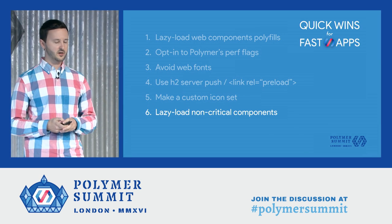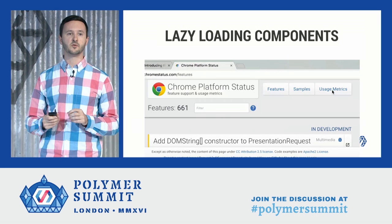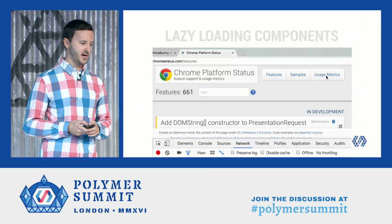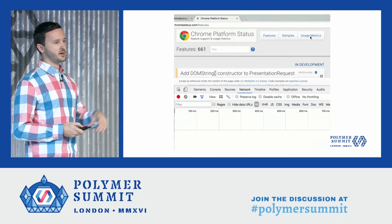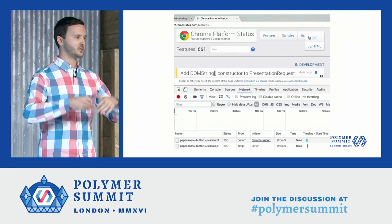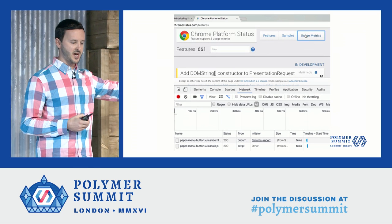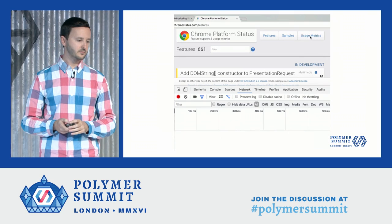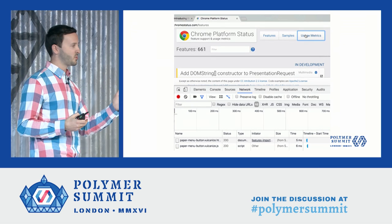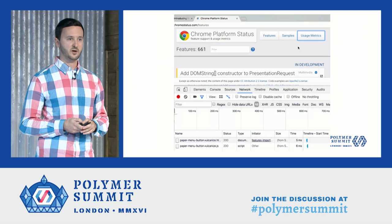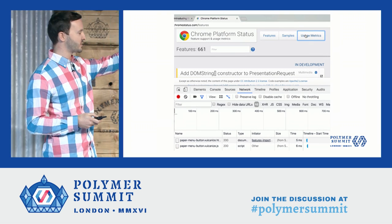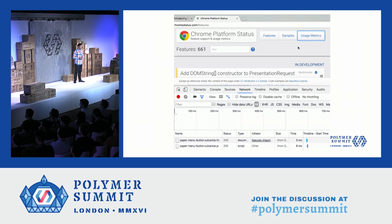Number six: lazy load non-critical components. The usage metrics button is actually a web component, and when the user clicks it for the first time, that's when we actually load the import for those web components. You can see in the network tab that's when the paper menu Vulcanize bundle and JavaScript file come down. The second time the user clicks it, it's basically a no-op because the browser already has it cached. The same is true for the little question mark help screen — lazy loaded using the same technique.